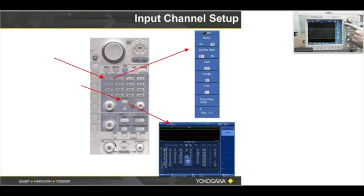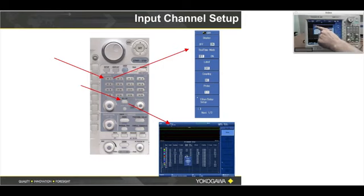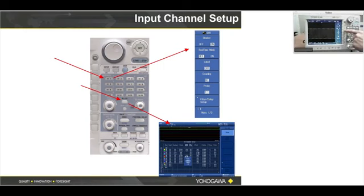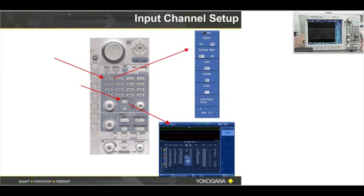Please look at soft menu items one through seven — these are very similar for all modules and all channels. I can turn the display on or off, I can label the channel — there's a place to put the word 'pressure,' for example. At soft menu button number four you can press DC, AC coupling, or ground, which is traditional with an oscilloscope or recorder. I can set the probe coupling — in my case I have the blue 10-to-1 iso-probe, so I have 10-to-1 on my probe.